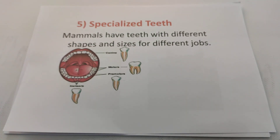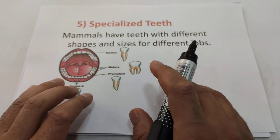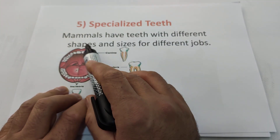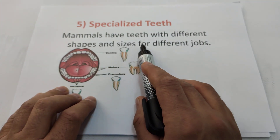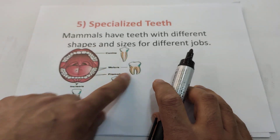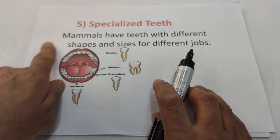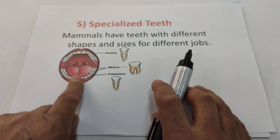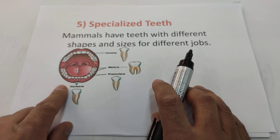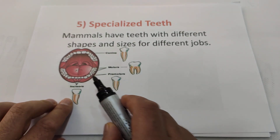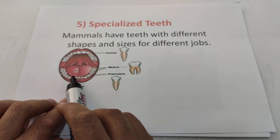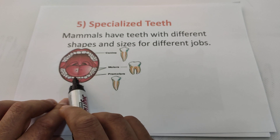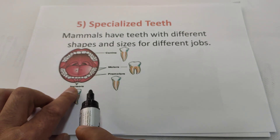Mammals have special teeth. Mammals have teeth with different shapes and sizes for different jobs. For example, human teeth have four kinds of teeth. Look here — those four teeth in front of our mouth we call incisors.